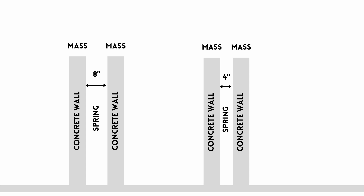Let's look at an example using concrete walls, since this is easier to understand than drywall walls. If we have a concrete wall with an eight-inch air gap between two concrete walls, that will be superior — better sound isolation — than the same concrete walls with a four-inch air gap. The reason is that when we decrease the air gap, we increase the rigidity of the spring.